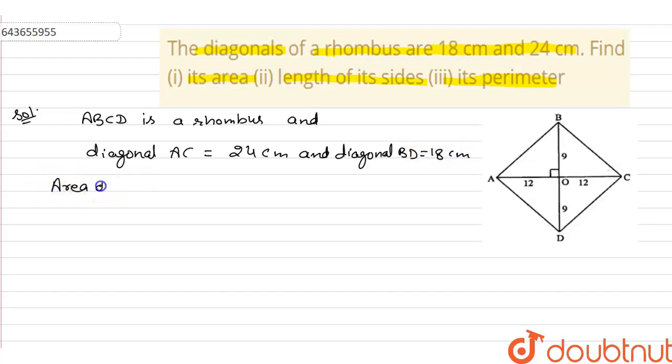Area of rhombus, we know that it is equal to one-half d1 into d2. d1 d2 means diagonal one and diagonal two, which is 24 and 18. After solving this, we get 216 square centimeter.